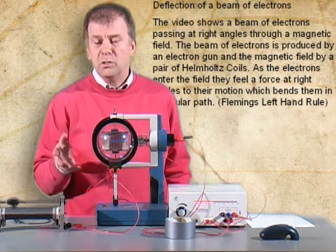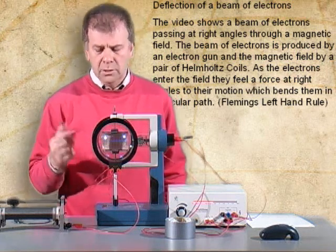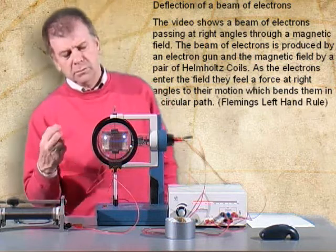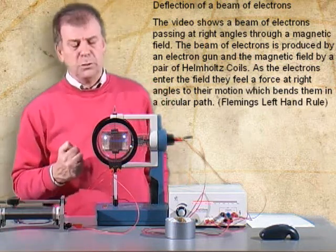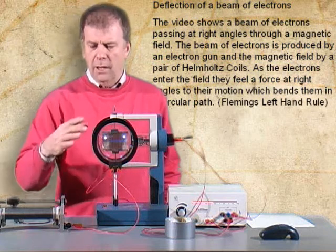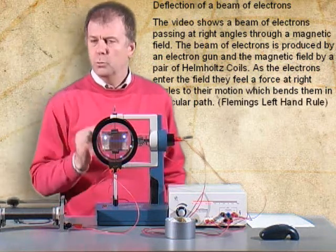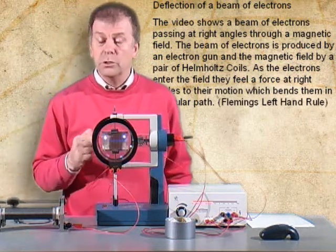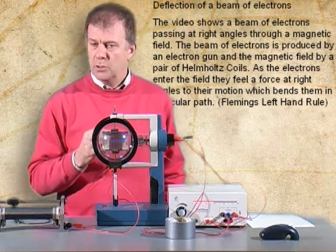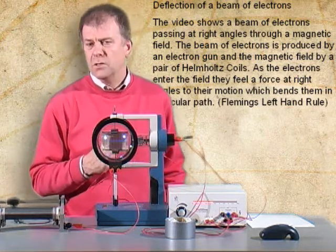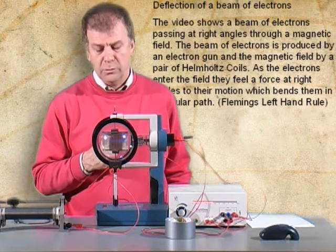As a real demonstration of this example you've just done, I've got a deflection tube here, which produces electrons. I have some coils, Helmholtz coils, which will produce a uniform magnetic field. And we'll see what happens when we pass the electrons into a uniform electric field.